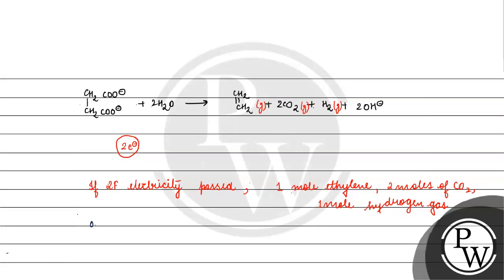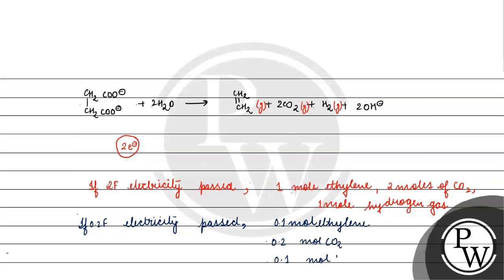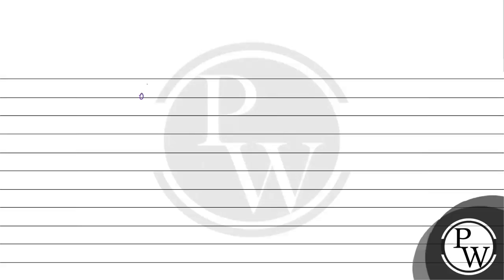With 0.2 Faraday passed, we get 0.1 mole of ethylene, 0.2 moles of CO2, and 0.1 mole of hydrogen gas. The total number of moles of gases we get is 0.1 plus 0.2 plus 0.1, which equals 0.4 moles of gas.